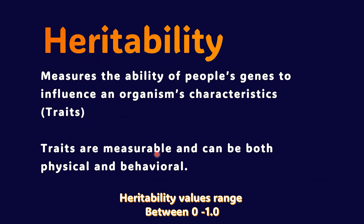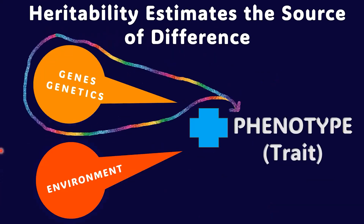Traits are measurable and can be both physical and behavioral. Heredity estimates the source of differences in appearance or traits. Genetic factors like genes play a significant role in determining many aspects of human appearance — traits like height, facial features, and skin color are influenced by genetic variations.